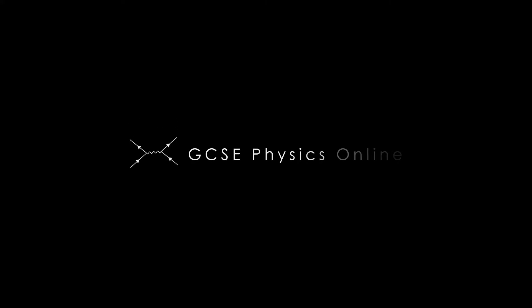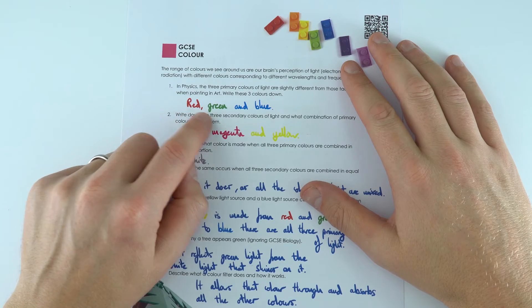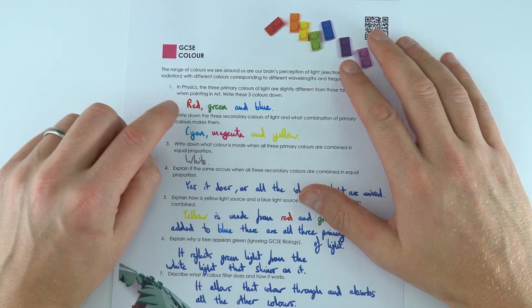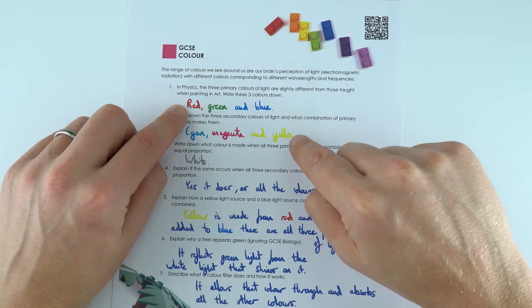I absolutely love teaching about colour. We've got the primary colours of light which are red, green and blue, and basically if you have red and green they make yellow.